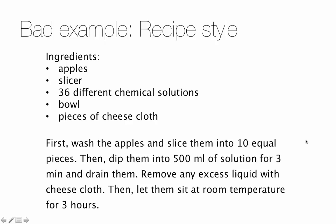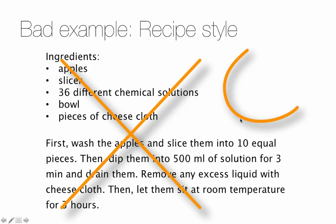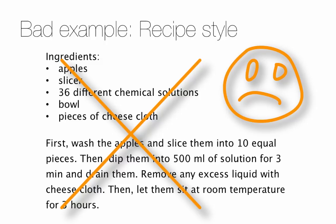Now let's take a look at some bad examples. I took one of the paragraphs from the Apple paper and rewrote it in a recipe style. Here I listed the ingredients: apples, slicer, 36 different chemical compounds, bowls, pieces of cheesecloth. This is terrible. Then I used the recipe style to write it, which is also terrible. 'First, wash the apples and slice them into 10 equal pieces. Then dip them into 500 milliliters of solution for three minutes and drain them. Remove any excess liquid with cheesecloth. Then let them sit at room temperature for three hours.' This is a recipe style — don't use the command style when you write your paper.